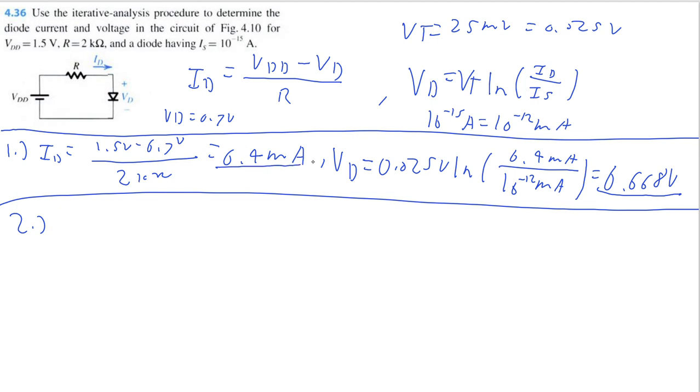Let's repeat this procedure again with our new value of VD. We're going to recalculate ID. We're going to say it's 1.5 volts minus 0.668 volts divided by 2 kiloohms. Checking my math, I get 0.416 milliamps. So my current is also greater than our first calculation.